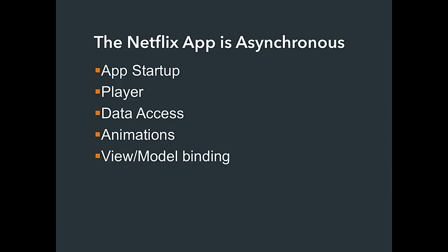There were lots of async problems: app startup — going to the server retrieving services, waiting for things like the player to load. Data access in JavaScript is going to be asynchronous. Animations — after you get your data back you want to do a screen transition. View and model binding — when you change the model, sometimes you want to asynchronously bind to the view.